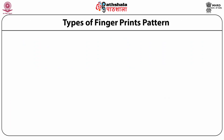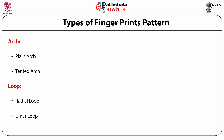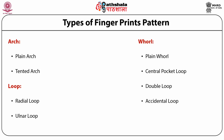Types of Fingerprint Patterns. Fingerprints may be resolved into four types of patterns, which may be further divided into subgroups. These divisions are: first, arch — plain arch and tented arch; second, loop — radial loop and ulnar loop; third, whorl — plain whorl, central pocket loop, double loop, and accidental loop; and fourth, composites.